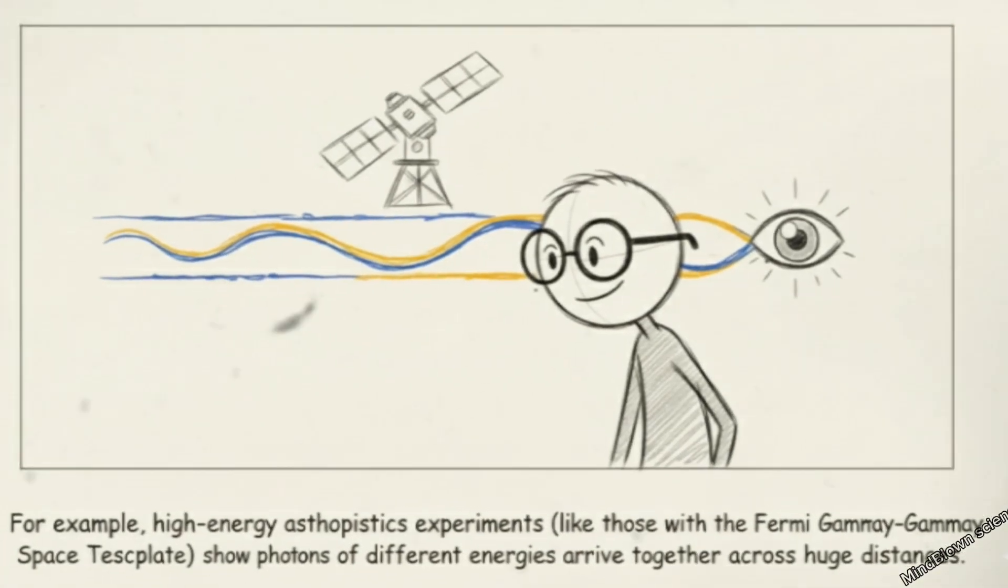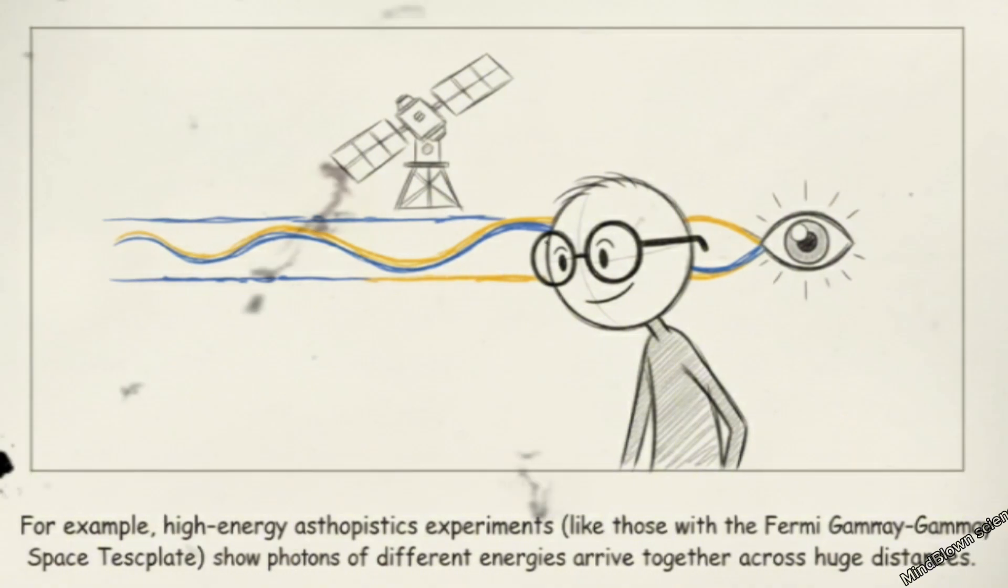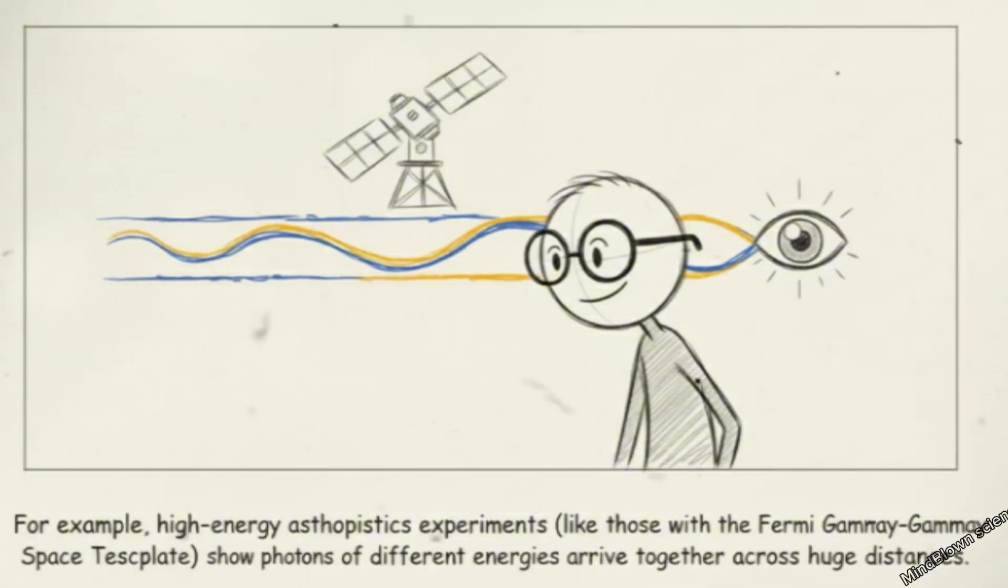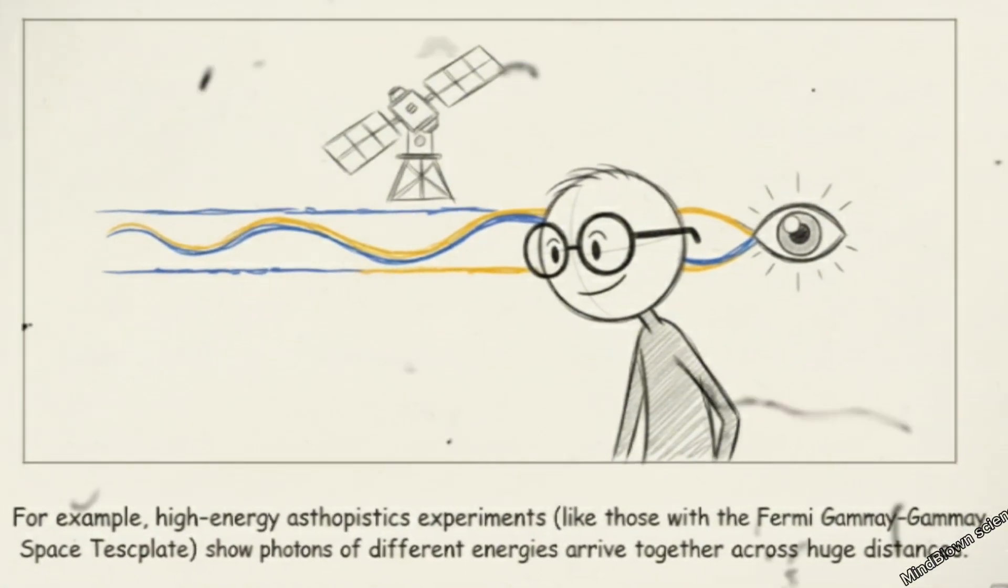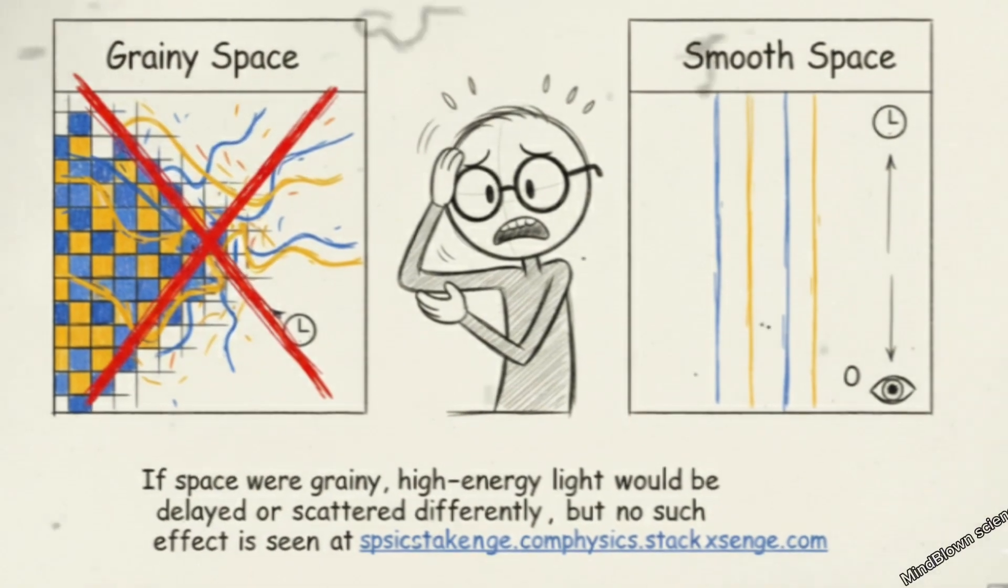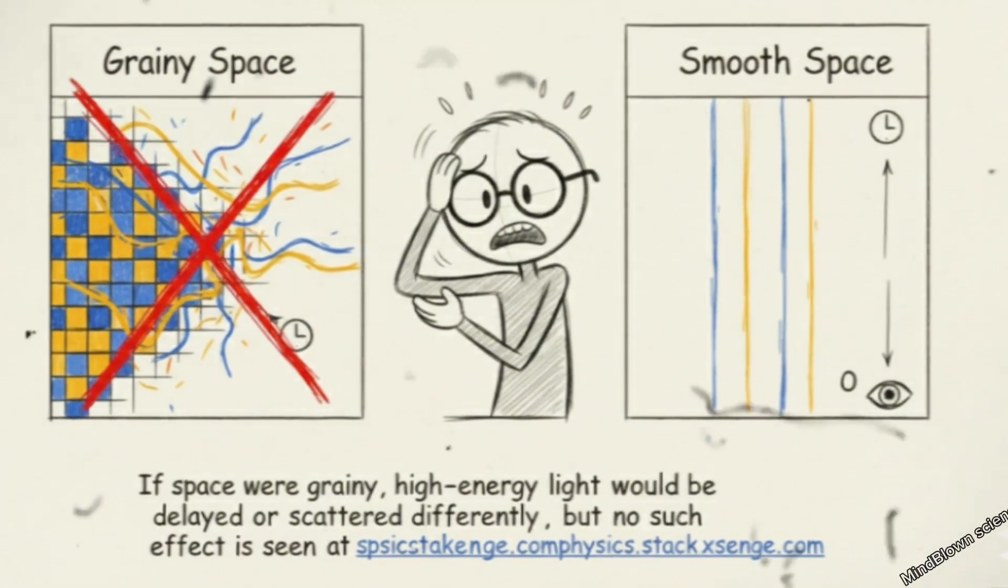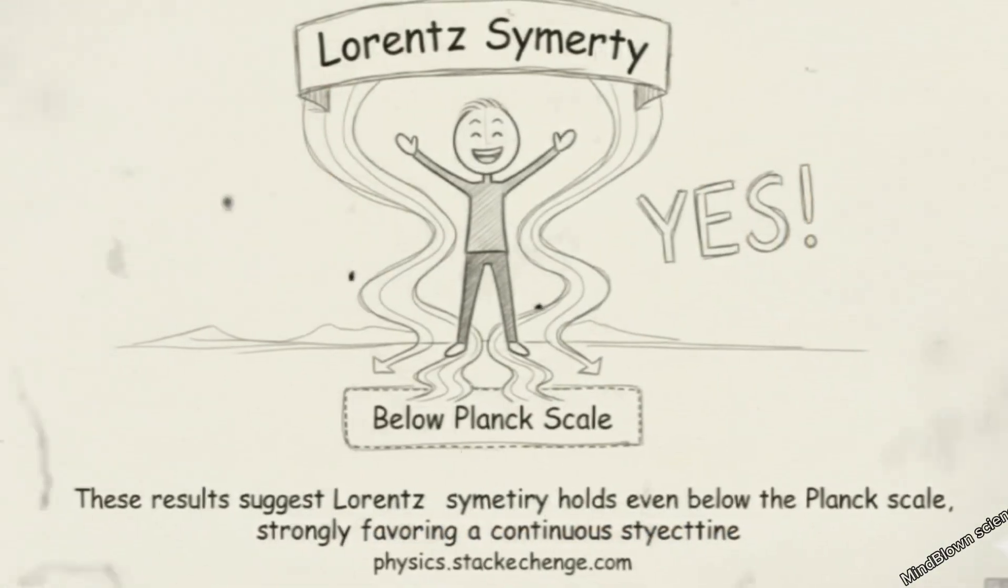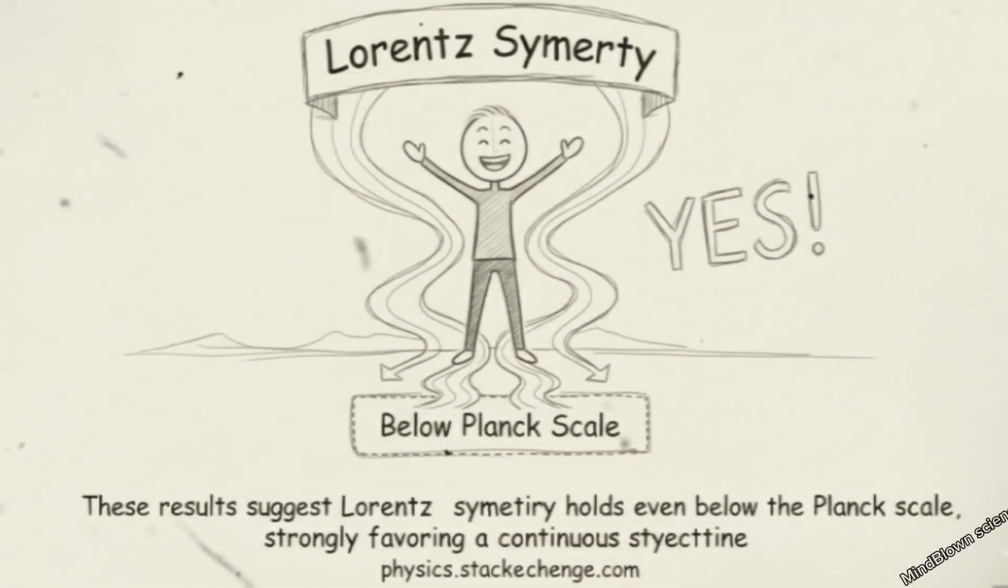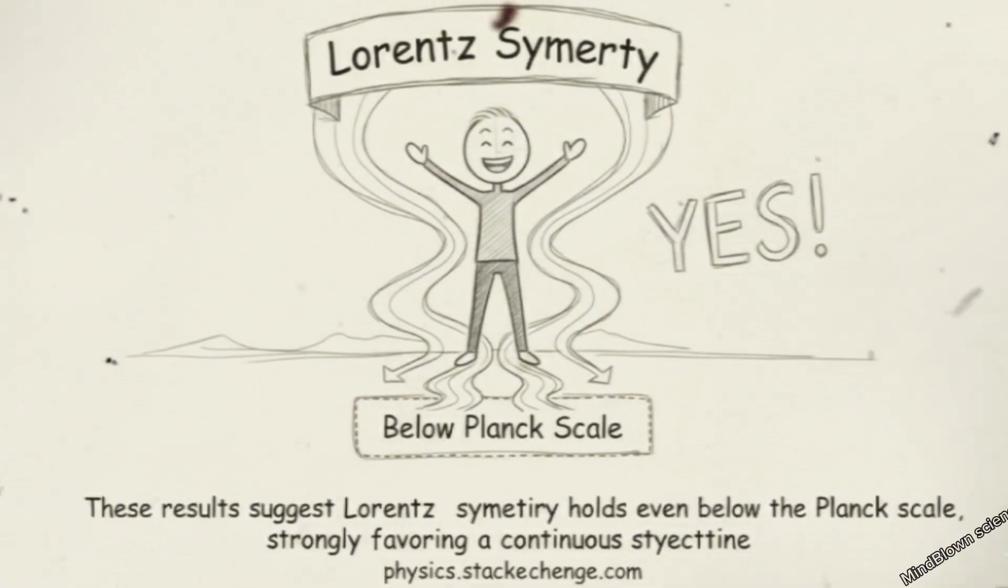For example, high-energy astrophysics experiments, like those with the Fermi Gamma-ray Space Telescope, show that photons of different energies arrive together across huge distances. If space were grainy, high-energy light would be delayed or scattered differently, but no such effect is seen. These results suggest Lorentz symmetry holds even below the Planck scale, strongly favoring a continuous spacetime.